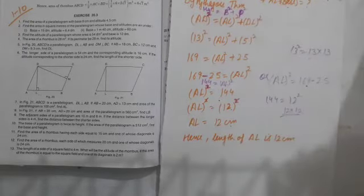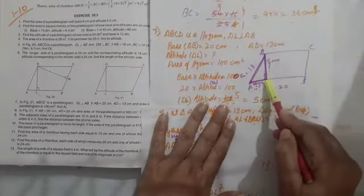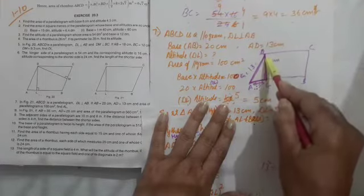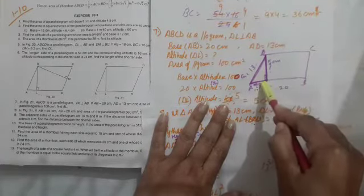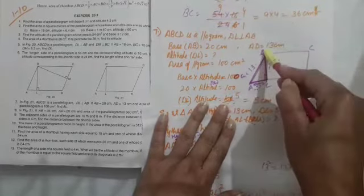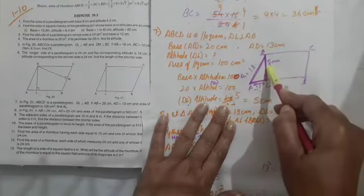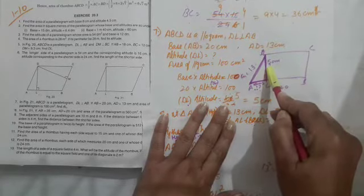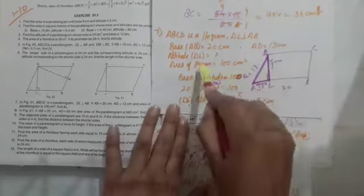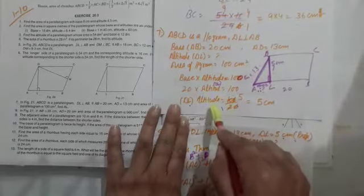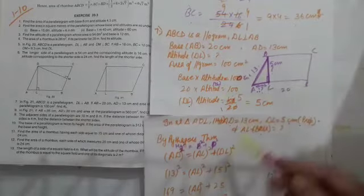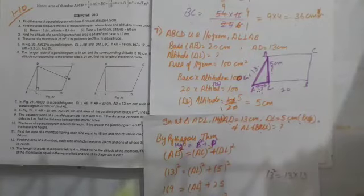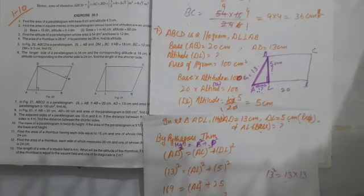Clear. Is figure mein humne AL nikalni thi. AL tab nikli jab right angle triangle consider kiya — kyunki DL perpendicular hai toh 90 degree ka angle bana, jo right angle triangle bana. Pehle area of parallelogram se DL (altitude) nikala, phir Pythagoras theorem se AL nikali. In the next video we will discuss the next 3 sums — 8, 9, and 10. Please note down in your notebook. Thank you, have a nice day.